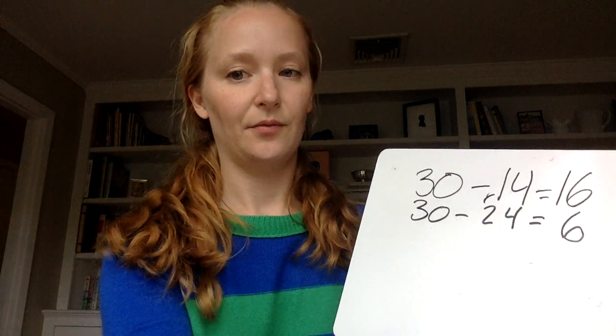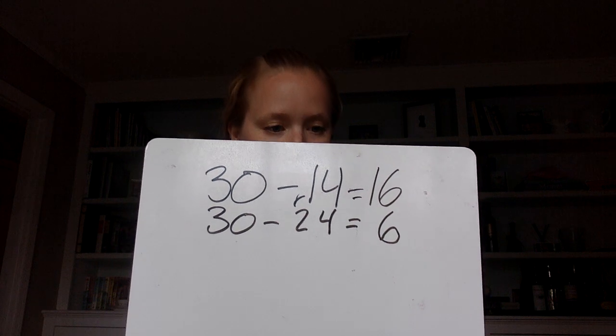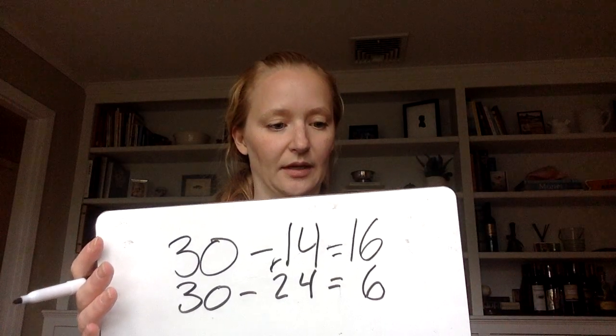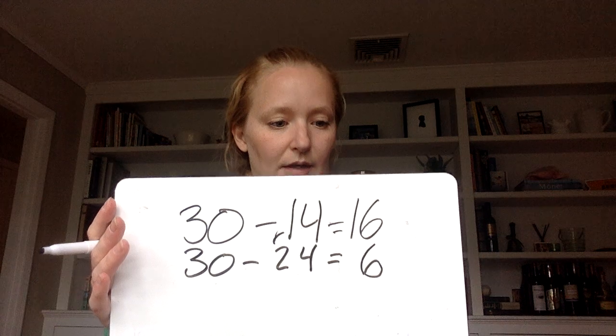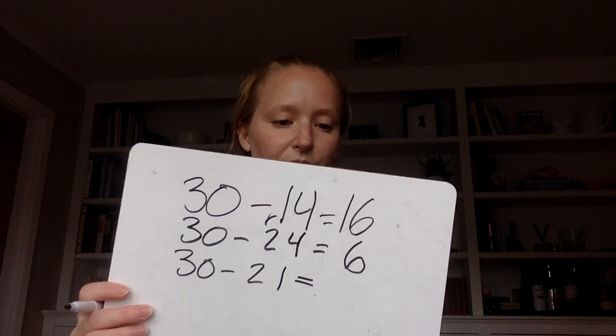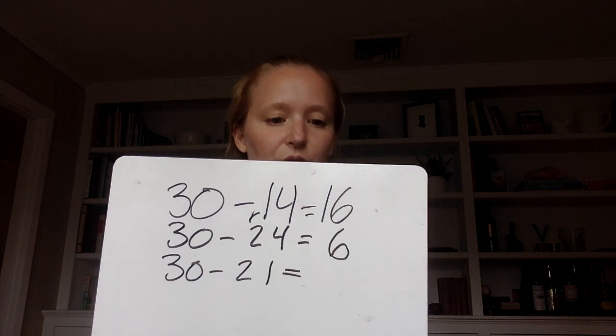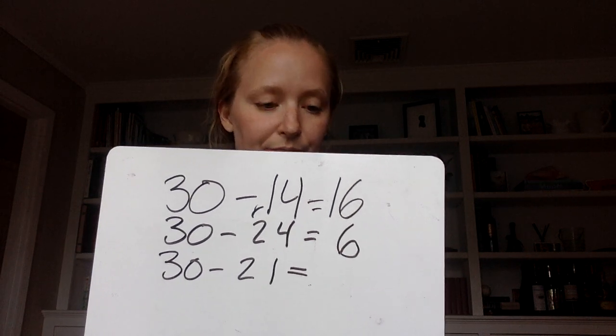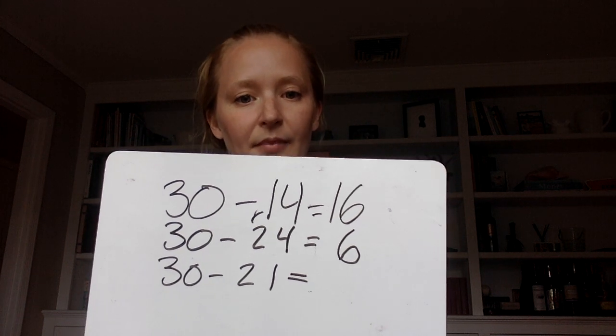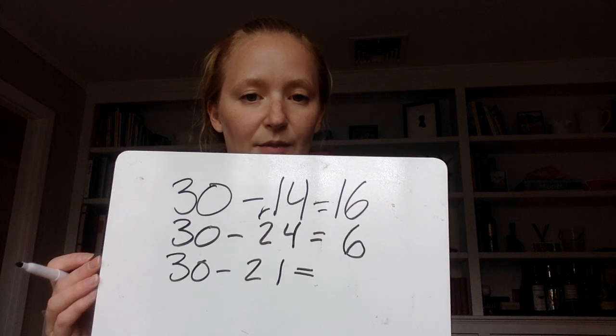Okay. So if that one was 6, our next problem is going to be 30 minus 21. So 30 minus 21. Think what you can do between these that are going to help guide you.